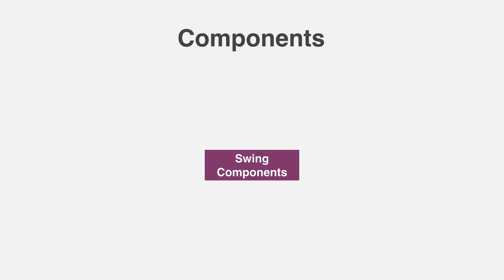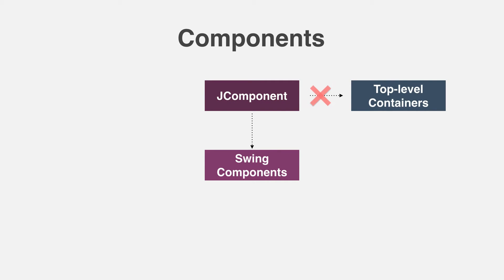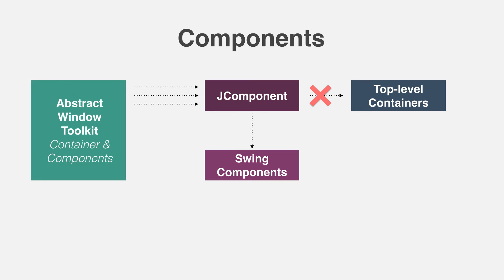In general, Swing components are derived from the JComponent class. The only exception to this are the four top-level containers. JComponent provides the functionality common to all components — for example, JComponent supports the pluggable look and feel. JComponent inherits the Abstract Window Toolkit classes Container and Component, so a Swing component is built on and compatible with AWT components.